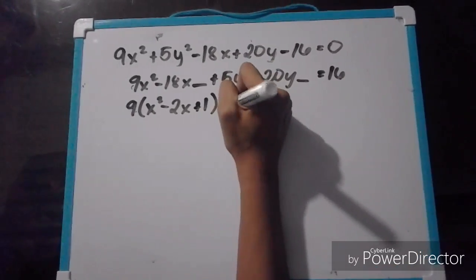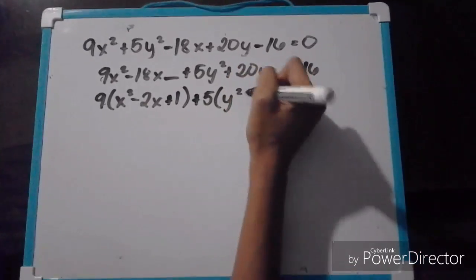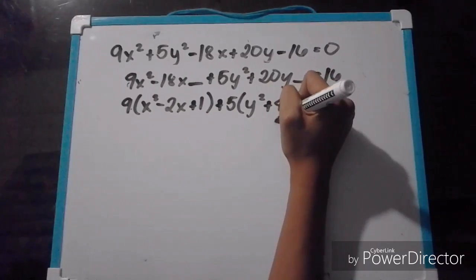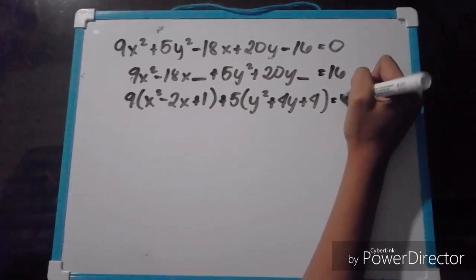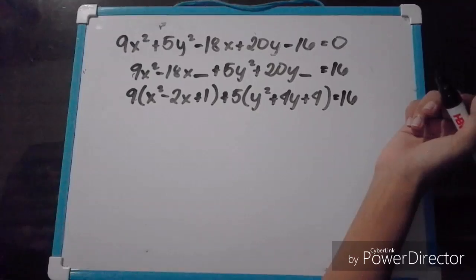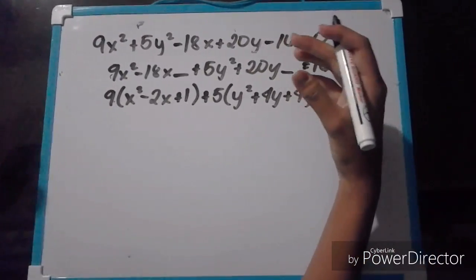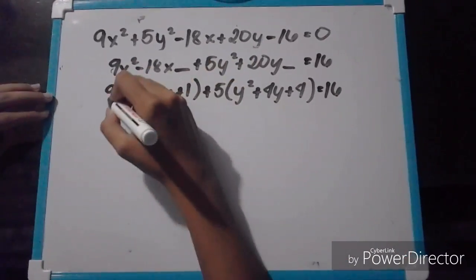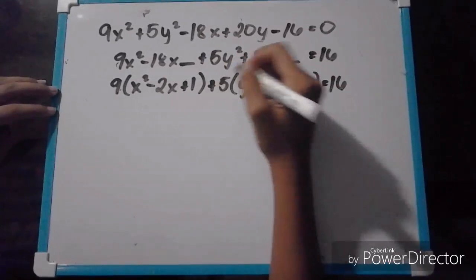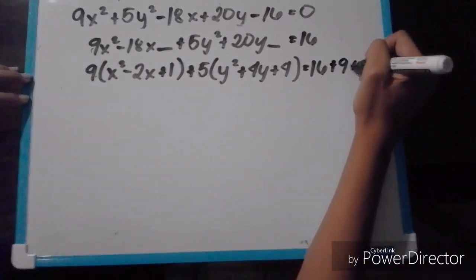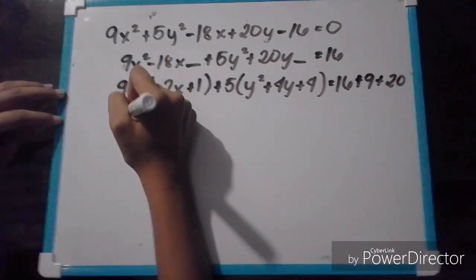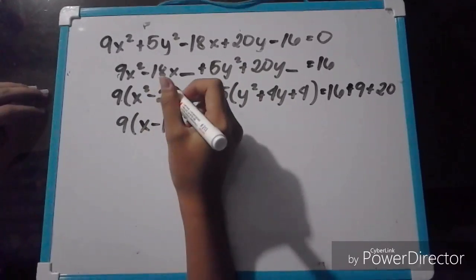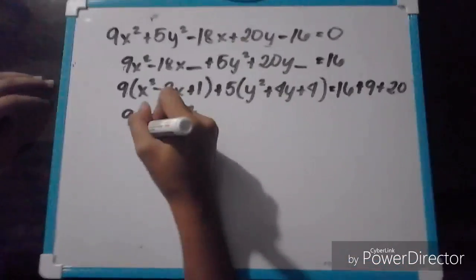Do the same thing for the y's: plus 5 times the quantity of y squared plus 4y plus 4, since 4 divided by 2, squared, is equal to 4. Remember, what you add on the left side must also be added to the right side. In this case, we multiply 1 by 9 and 4 by 5, so it will be plus 9 and plus 20 on the right side.